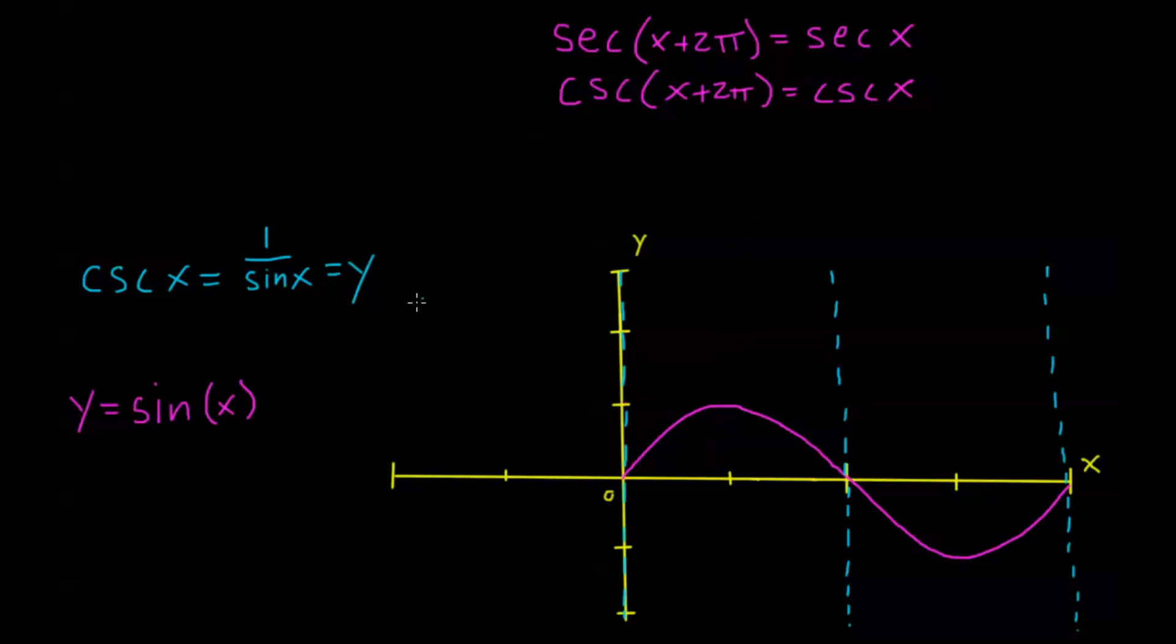Now I also know that when sine equals 1, well 1 over 1 is just 1, so cosecant is also going to be 1. So you can look right here where sine peaks out, and cosecant and sine share this point at this peak.